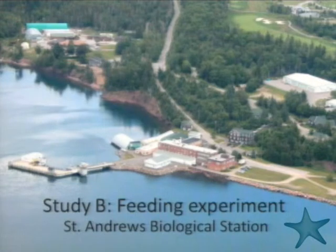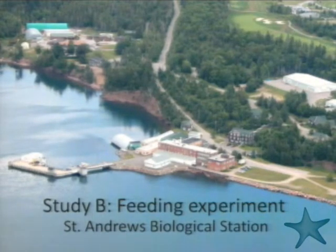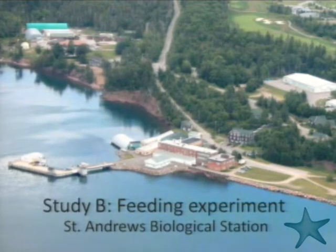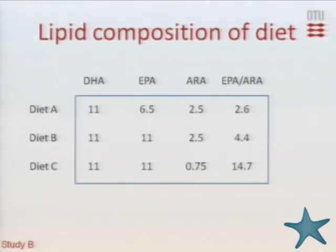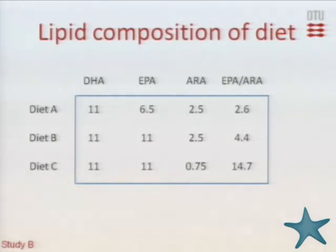We then tried to test this hypothesis with experimental work conducted at the St. Andrews Biological Station in New Brunswick, Canada, in collaboration with Triple and supported by Fris SGSM. Three different diets were made: ARA was high in diets A and B, and low in diet C. The difference between A and B was the EPA ratio, giving three different EPA-ARA ratios. Diet C most closely resembles the ratios from sprat and herring in the Baltic Sea. Fish were fed for more than six months to ensure the whole maturation period was covered.